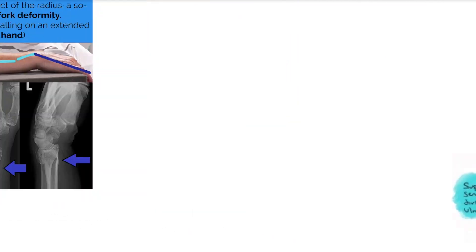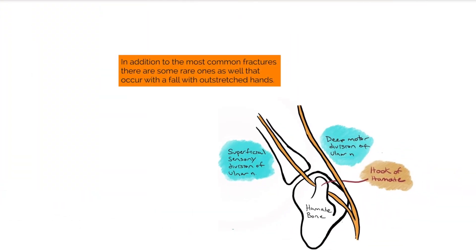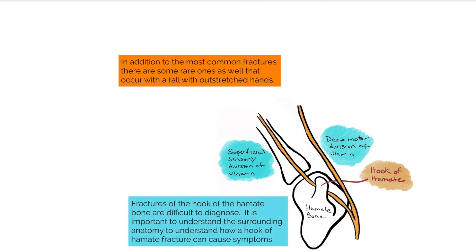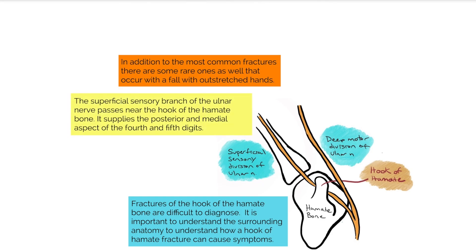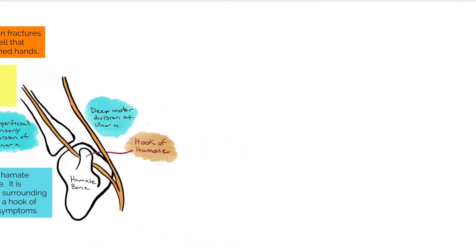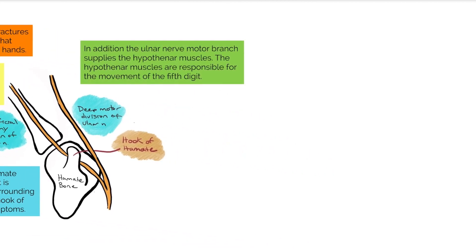In addition to the most common fractures, there are some rare ones that occur with a fall with the outstretched hands. Fractures of the hook of the hamate bone are difficult to diagnose. It is important to understand the surrounding anatomy to understand how a hook of hamate fracture can cause symptoms. The superficial sensory branch of the ulnar nerve passes near the hook of the hamate bone. It supplies the posterior and medial aspect of the fourth and fifth digits. In addition, the ulnar nerve motor branch supplies the hypothenar muscles.